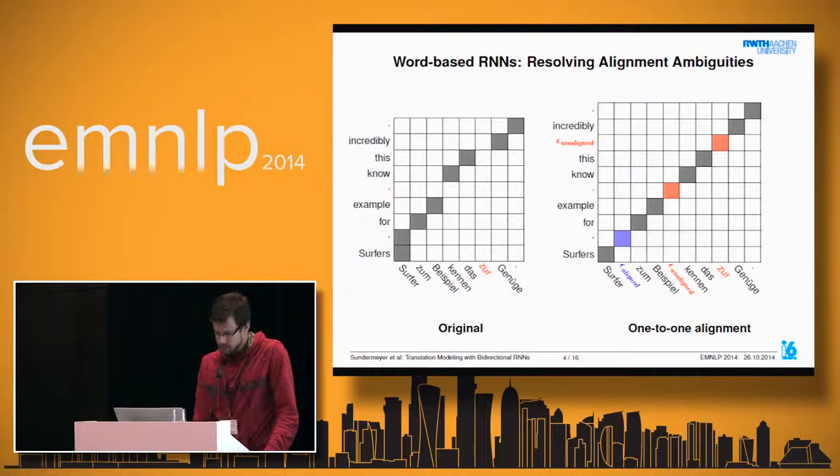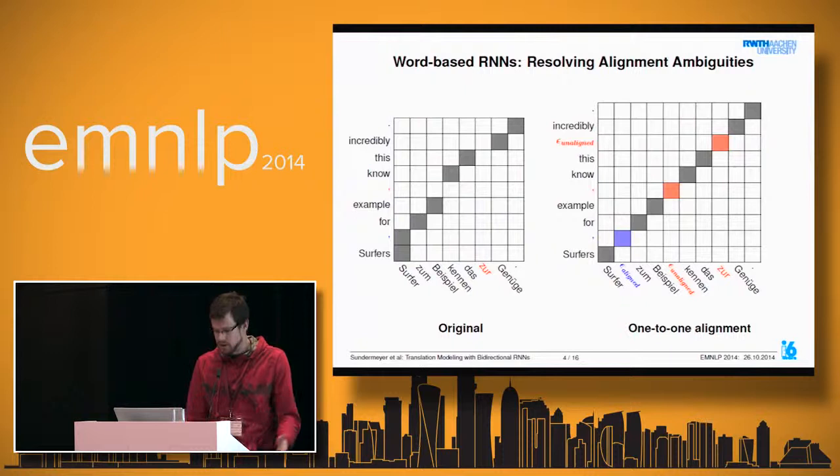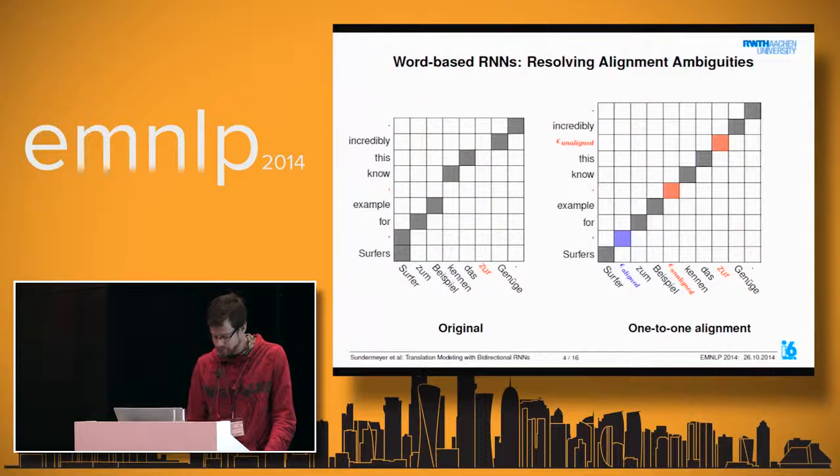The other case to handle is unaligned words, such as a comma on the target side or the German word 'zur' on the source side. We do something similar: we introduce a separate epsilon token called epsilon-unaligned on the opposite side, positioned next to the closest aligned word.